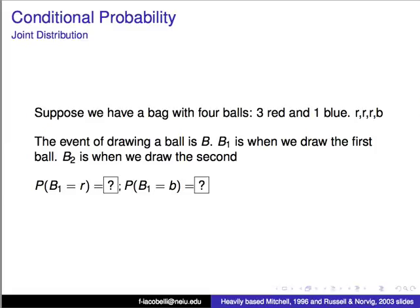I'll talk about conditional probability, as it will help us later with other interesting graphical models, such as Bayesian networks. I'm going to talk about what's called the joint distribution first, but we'll talk about other topics as well.